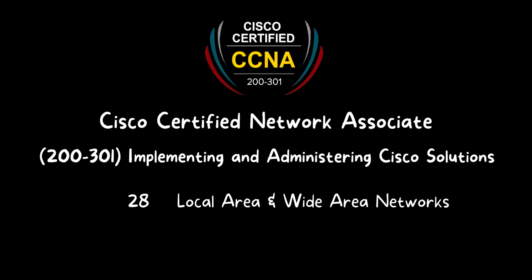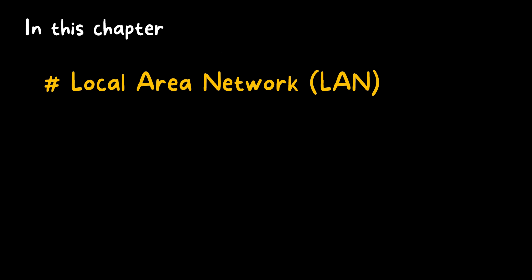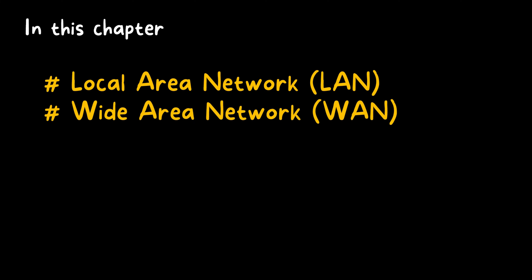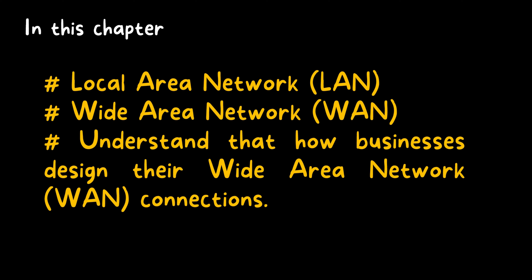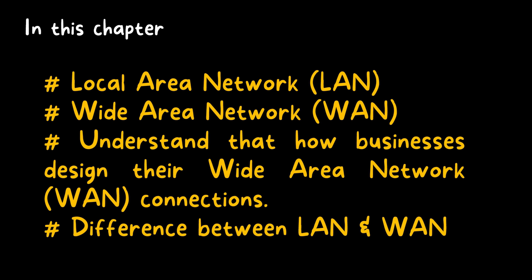Welcome to CCNA 200-301: Implementing and Administering Cisco Solutions, Chapter 28 — Local Area and Wide Area Networks. In this chapter, we will discuss about the local area network, the wide area networks, how businesses design their wide area network connections, and finally the difference between LAN and WAN.